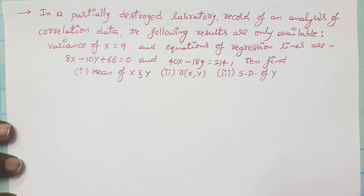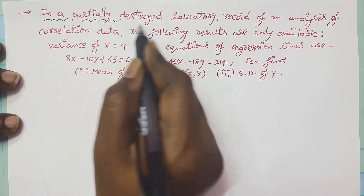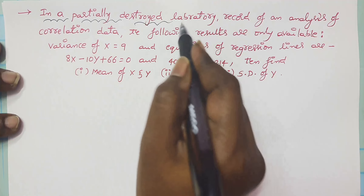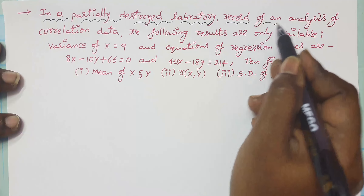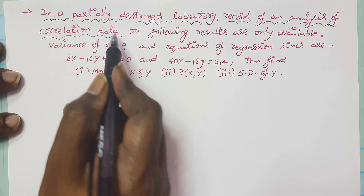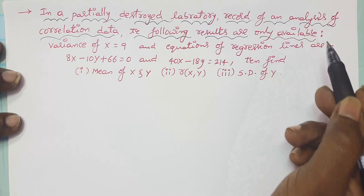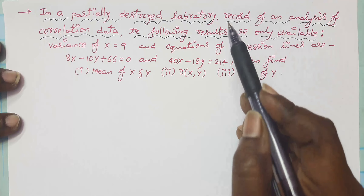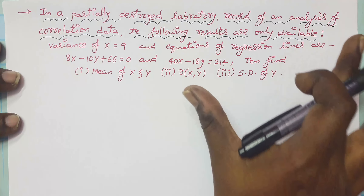Hi everyone. This is another example on correlation coefficients and regression lines. In a partially destroyed laboratory, a record of an analysis of correlation data is available, and the following correlation data is given to us.